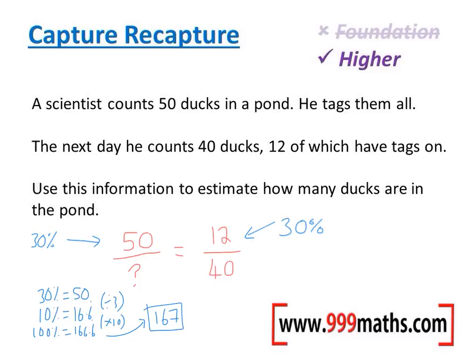Another way of doing it, which I'll do in green, is to think about making these fractions equivalent. Whatever I've multiplied the top of this fraction by, I need to do the same to the bottom. So 12 multiplied by what makes 50? Well, 50 divided by 12 would help us there, which is 4.16 recurring. So I've got to multiply 40 by 4.16 recurring, and that also gives me 167 ducks.